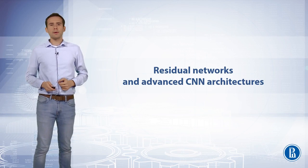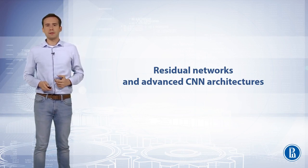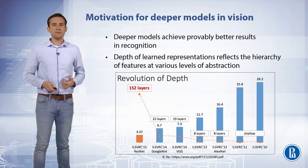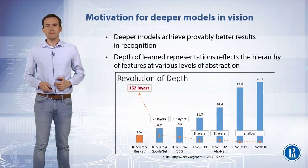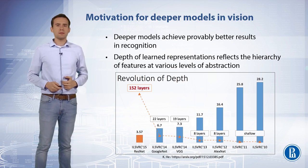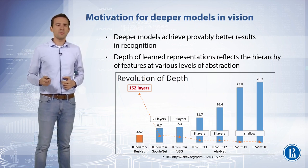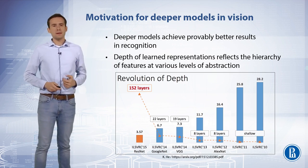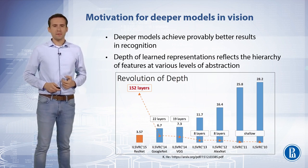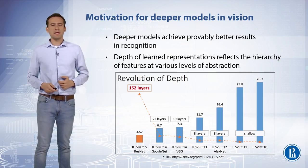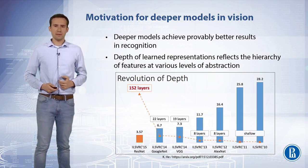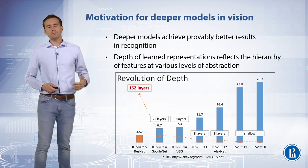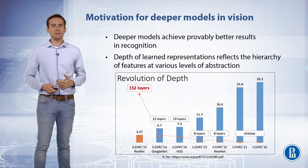In this video we will talk about the trick called residual learning that allows building deeper models in vision. So why do we need deeper models in vision? Presumably because practice shows that they achieve better results in visual recognition. The motivation is that depth of internal representation is able to capture the hierarchy of functions that exists in the real world.